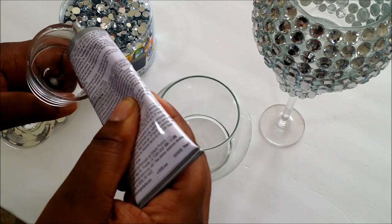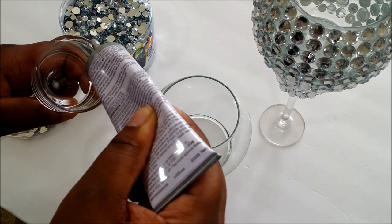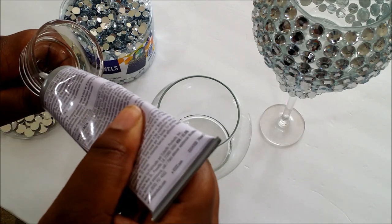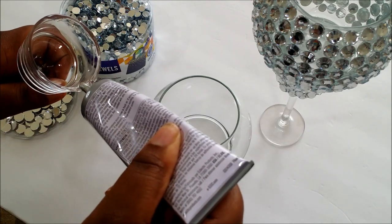Now before you put the glue on the pieces, you want to make sure that it's nice and clean. I use some rubbing alcohol just to make sure that there's no grease from my hands or other surface contaminants.